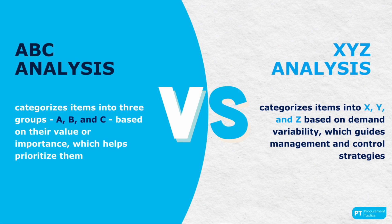Let's define the two important inventory management concepts. The ABC analysis categorizes items into three groups — A, B, and C — based on their value or importance, which helps prioritize them. The XYZ analysis, on the other hand, categorizes items into X, Y, and Z based on demand variability, which guides management and control strategies.